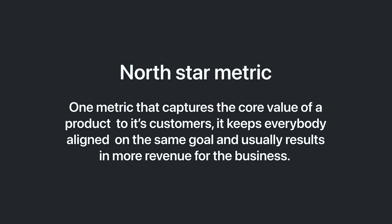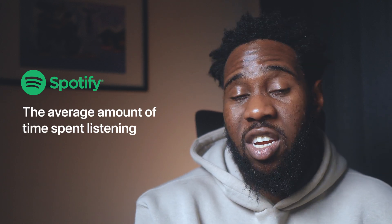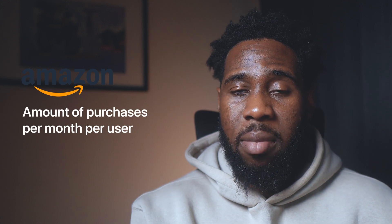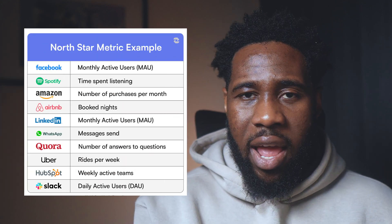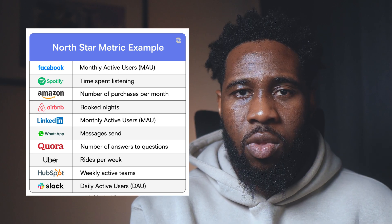Having understood these metrics, it's easier to know which metric to focus on depending on the user behaviors you're seeing or the kind of problem you're trying to solve. Most businesses usually have a North Star metric — the one metric that captures the core value of a product to its customers. It keeps everybody aligned on the same goal and usually results in more revenue. For example, Spotify's North Star metric is average time spent listening, and Amazon's is the number of purchases per month per user.